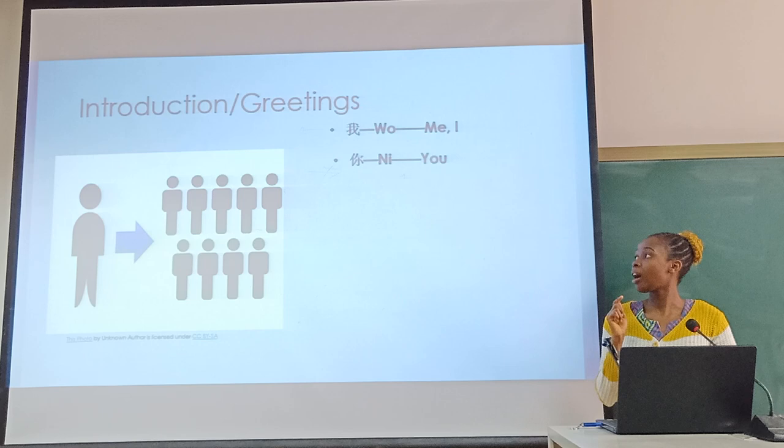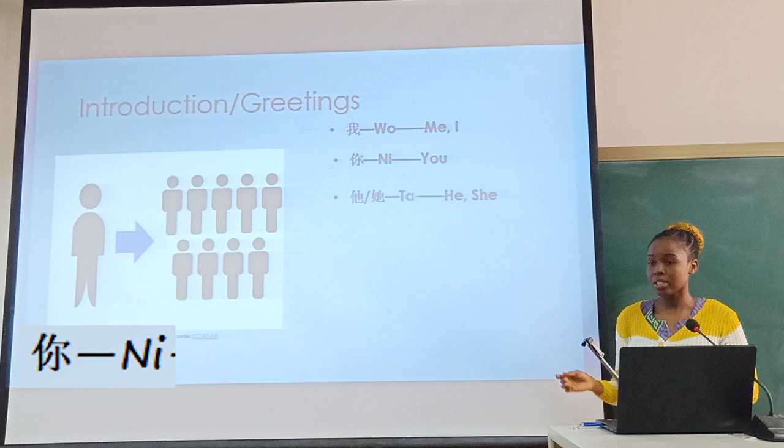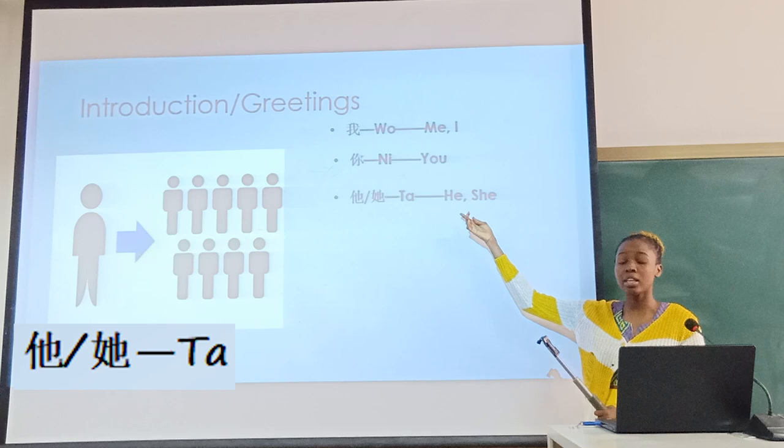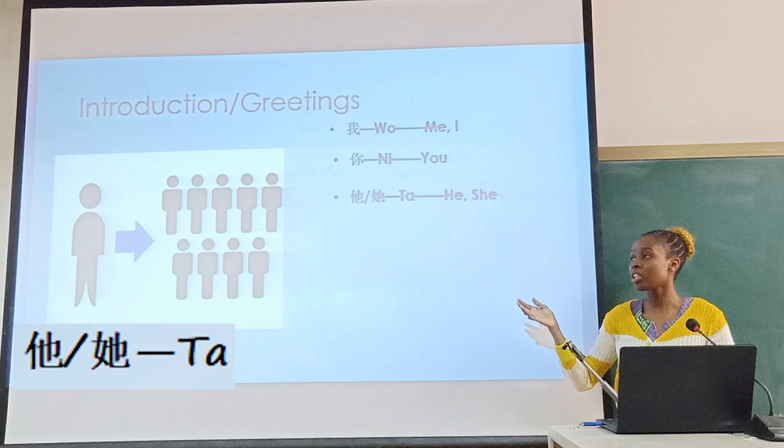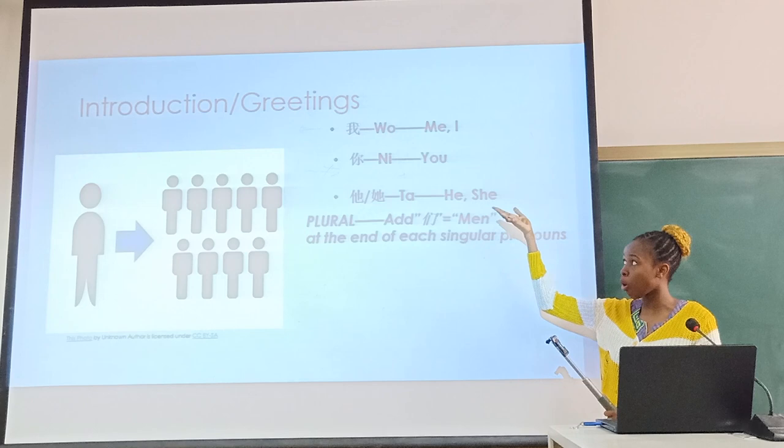The next one is how to say 'you', which is Nǐ. And the last pronoun is Tā. The first Chinese character of Tā represents 'he', and the second character represents 'she'. So if you want to say 'he' or 'she', you just say Tā.